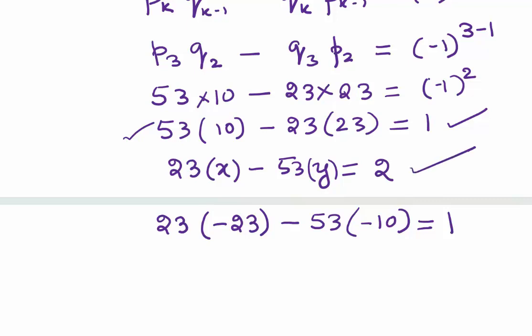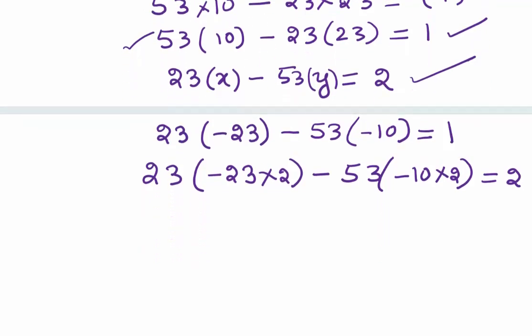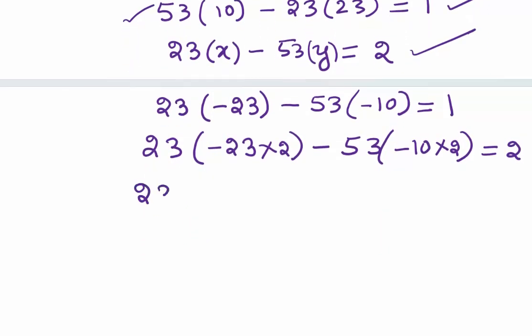But our right-hand side of the original equation has 2, so we will multiply all over by 2. We will get 23·(-46) - 53·(-20) = 2. If you have a doubt, just simplify the left-hand side of the equation. You should get 2.